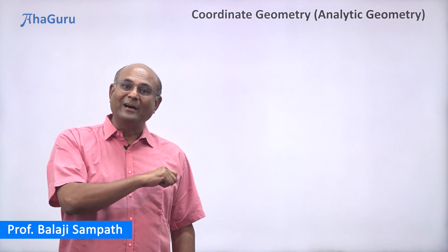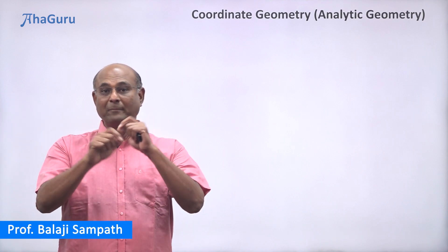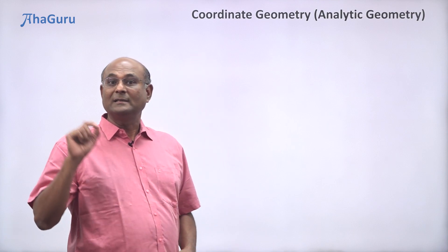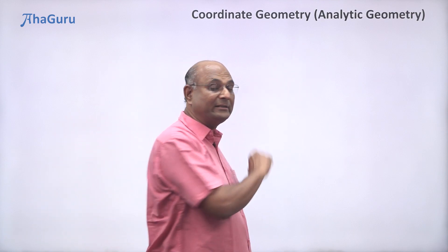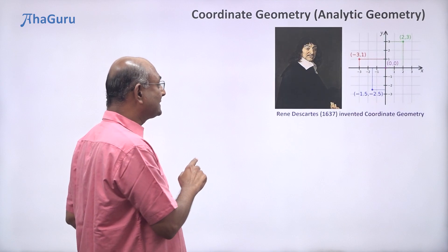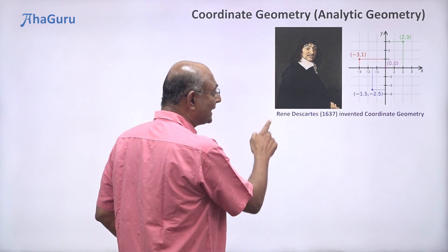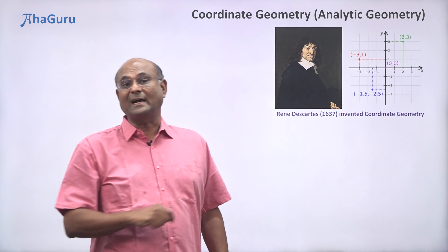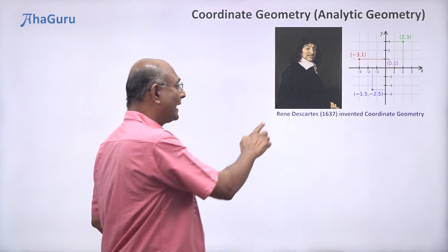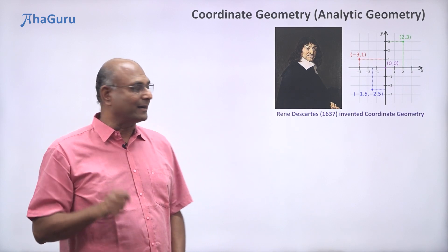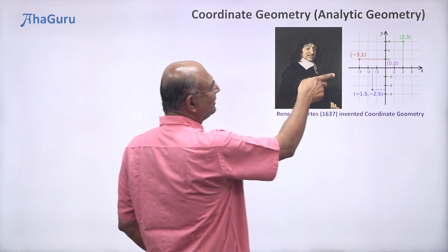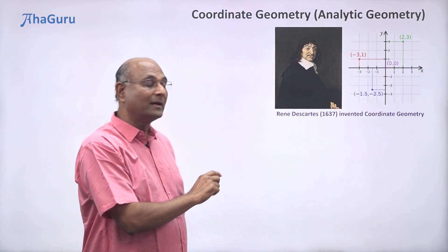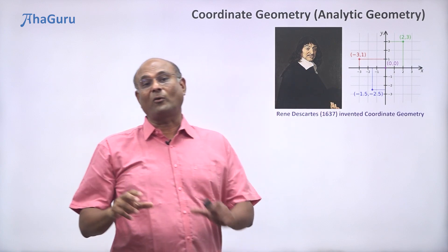We are now going to learn a very important topic in mathematics — coordinate geometry, sometimes also called analytic geometry. In 1637, that was when Descartes invented coordinate geometry. His name is written as Descartes; he's a French fellow and so we pronounce it as Descartes. You are probably already familiar with this idea of x-axis and y-axis — that is the system of coordinate geometry.